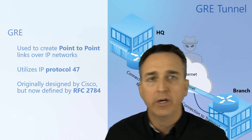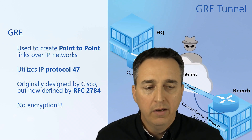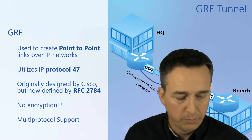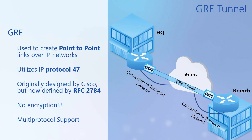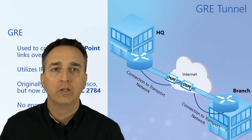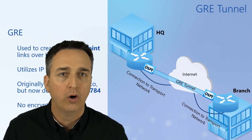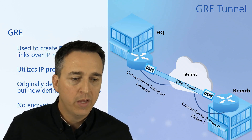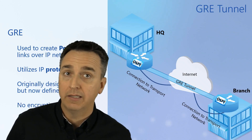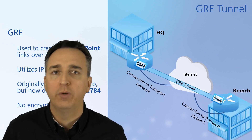The problem with GRE tunnels is that there's no encryption and no protection, so they're very susceptible to man-in-the-middle attacks and eavesdropping. But the greatest thing about GRE is multi-protocol support. What does that mean? We support more than just IPv4 unicast or IPv6 unicast traffic. An IPsec site-to-site VPN only transports IPv4 or IPv6 unicast, but a GRE tunnel gives us the ability to transport broadcasts, multicasts, and unicast — supporting dynamic routing protocols and much more.